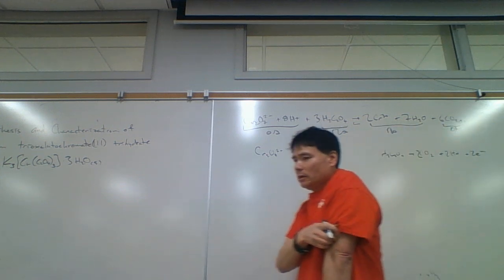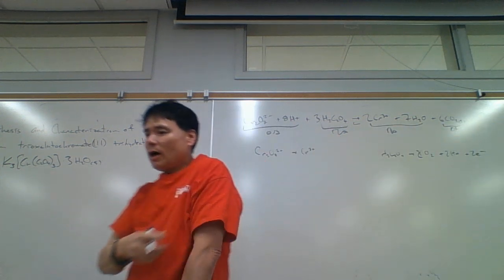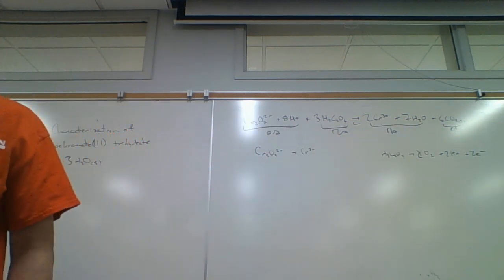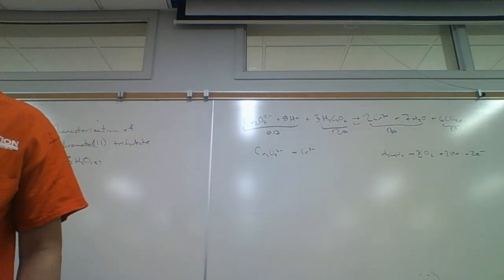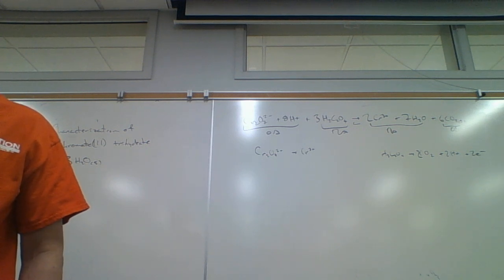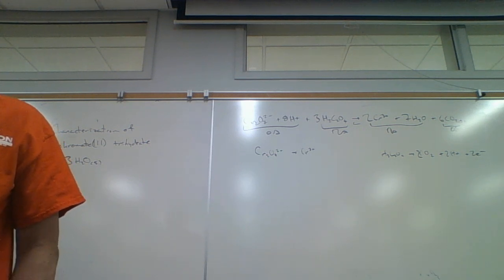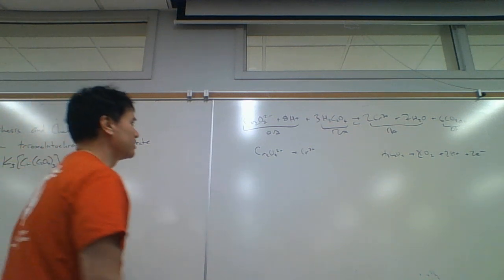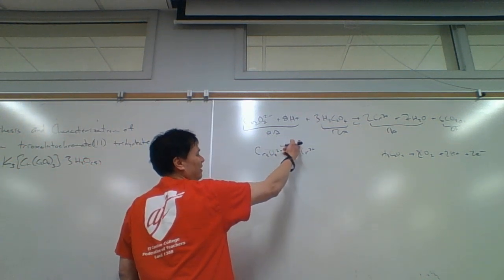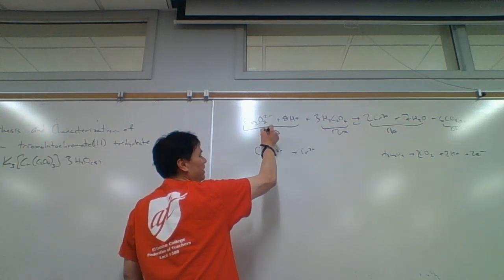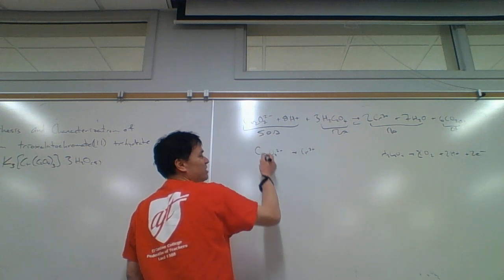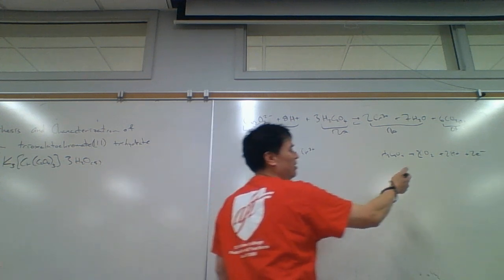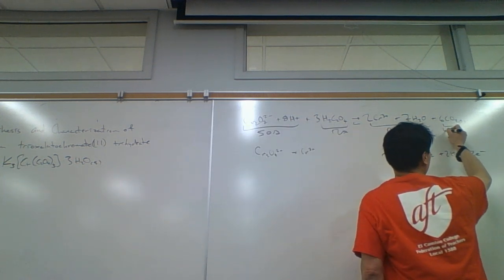Now, what do you think is a more powerful oxidizing agent — CO₂ or dichromate and acid? Dichromate and acid. CO₂ we know from experience isn't very good.